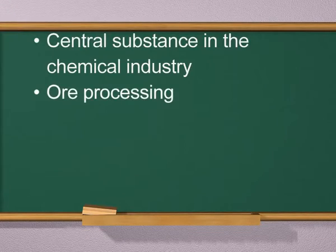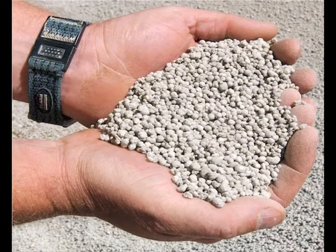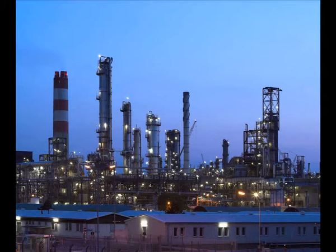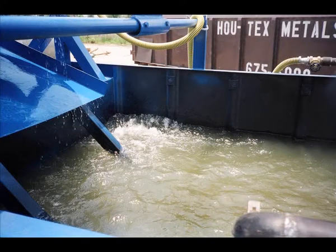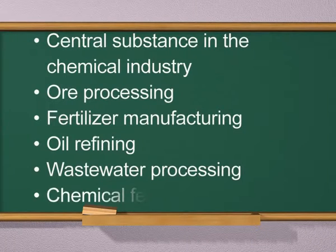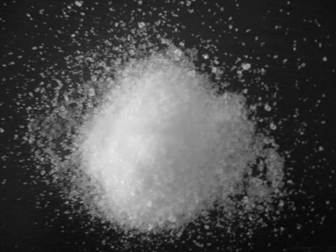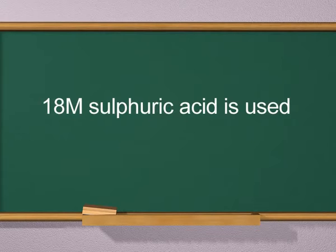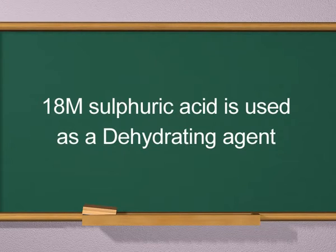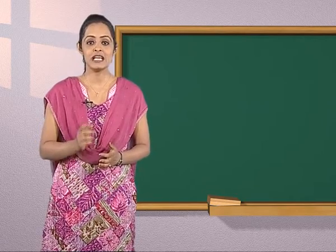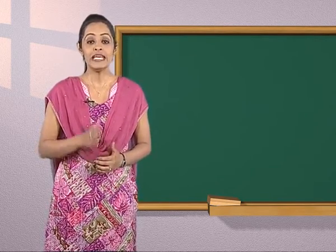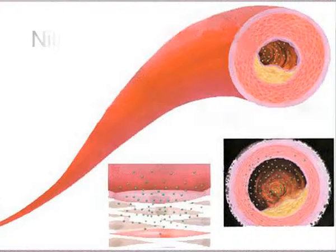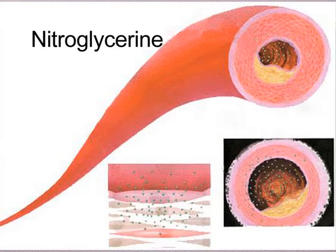Sulfuric acid is used in oil processing, fertilizer manufacturing, oil refining, wastewater processing, and the production of chemical fertilizers. Concentrated sulfuric acid — that is, 18 molar sulfuric acid — is used as a dehydrating agent to remove water, since it has a tendency to form hydrates. It is also used in the production of nitroglycerin, an inorganic ester and organic nitrate.